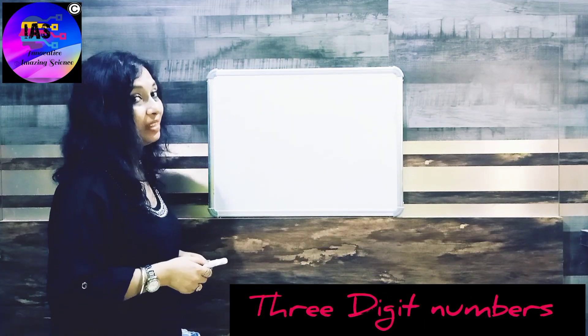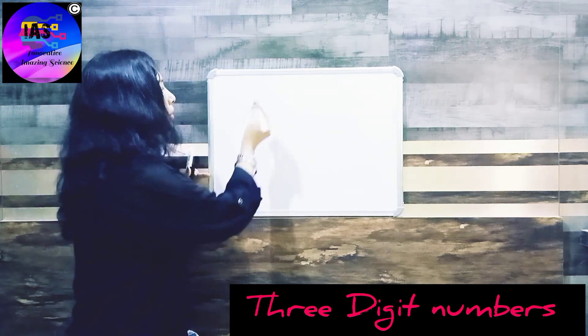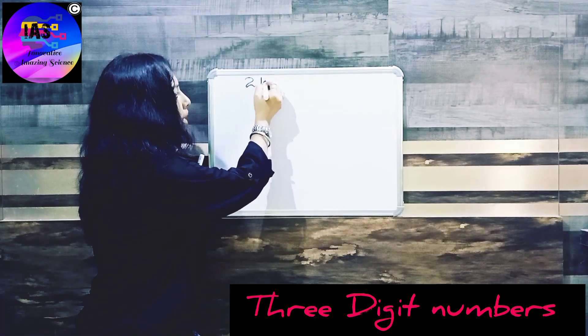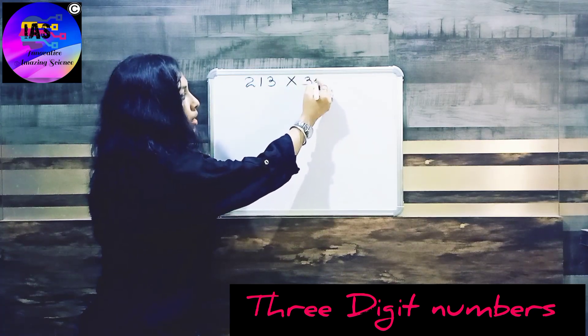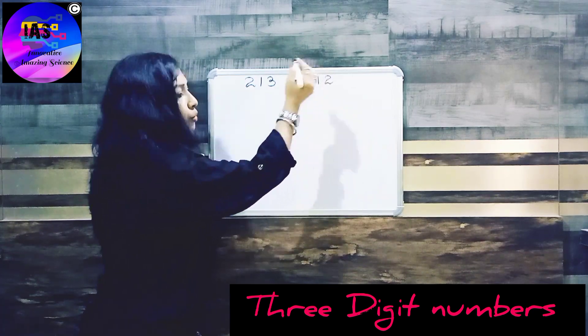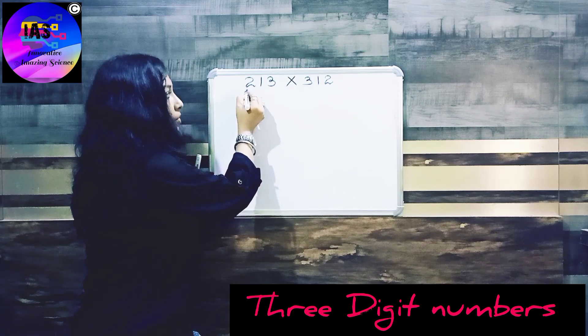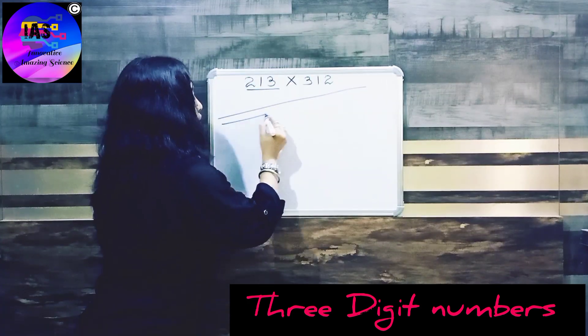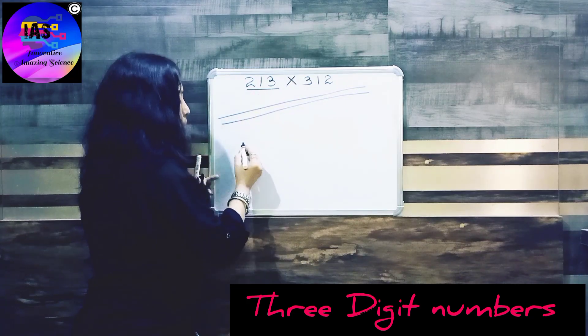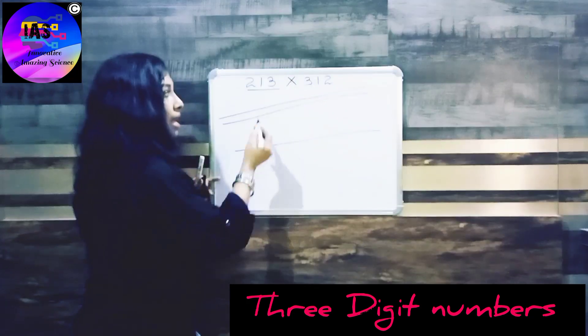So let's see how this trick works with a 3-digit number. So let's write 213 into 312, for example. So our first number is 213: one, two. Next number is 1, and here we have 3: one, two, three.